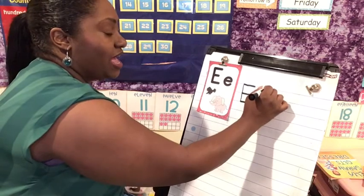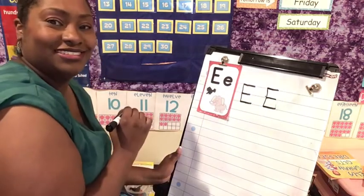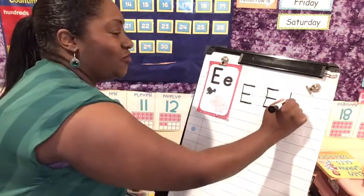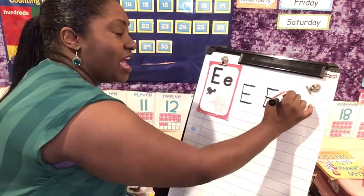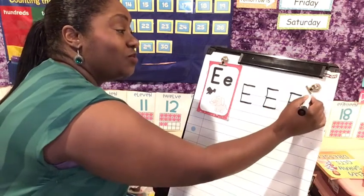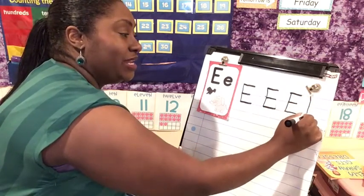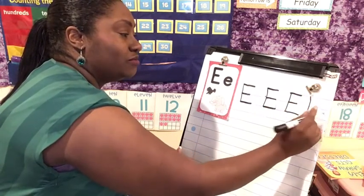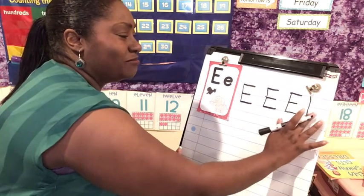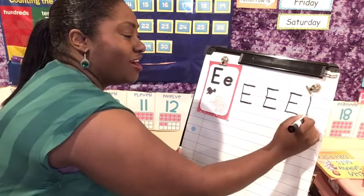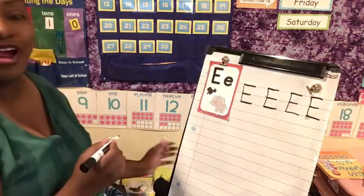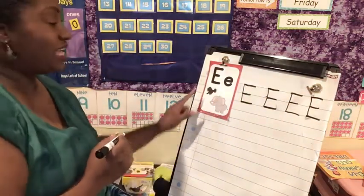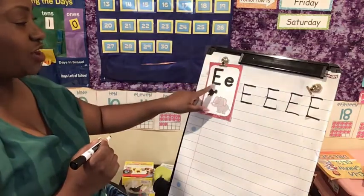Down one, over two, over three, and over four. Let's do one more time. Down one, over two, that one's a little bit crooked, that's okay, over three and over four. That's our capital E.